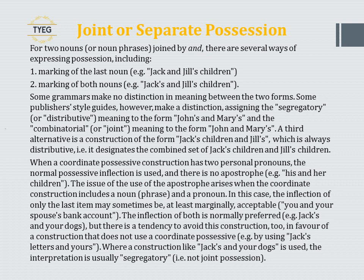When a coordinate possessive construction has two personal pronouns, the normal possessive inflection is used with no apostrophe — for example, 'his and her children'. When the coordinate construction includes a noun phrase and a pronoun, inflecting only the last item may sometimes be acceptable: 'you and your spouse's bank account'. Inflecting both is normally preferred — for example, 'Jack's and your dog's' — but there is a tendency to avoid this in favour of a construction that does not use a coordinate possessive, such as 'Jack's letters and yours'.